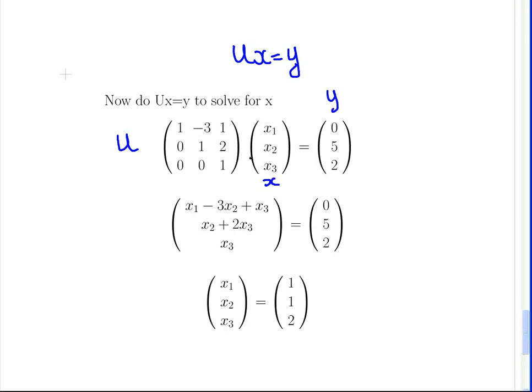So again we multiply it out. 1 minus 3, 1 times x1, x2, x3. So we get x1 minus 3x2 plus x3. And we have middle row 0, 1 and 2. Multiply that by x1, x2, x3. We get x2 plus 2x3. And finally, 0, 0, 1. We just get x3. And that is equal to 0, 5 and 2.